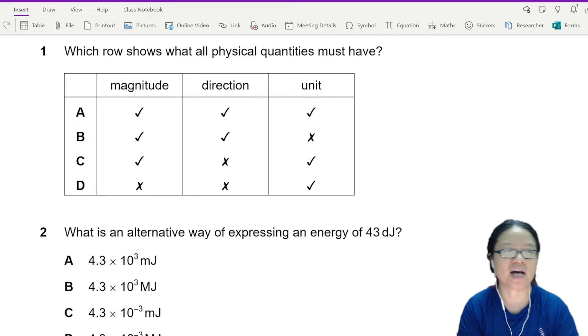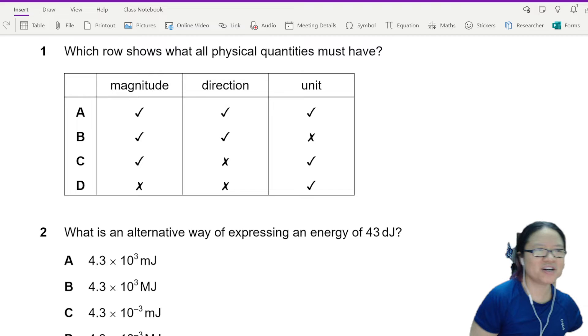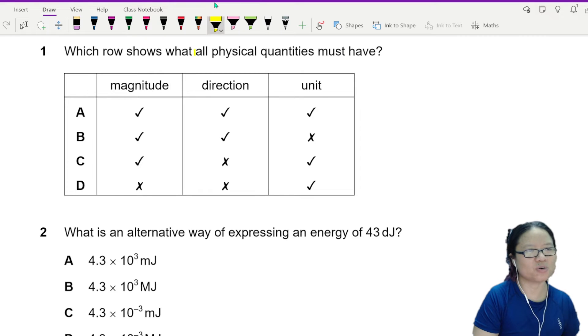In this question, you are just asked to think about what physical quantities are, and you are asked to figure out which row shows what all physical quantities must have.